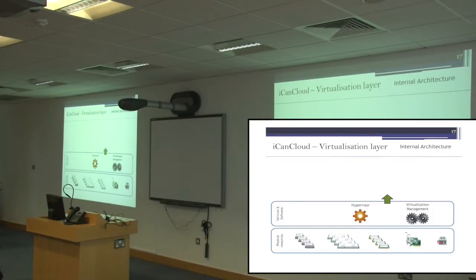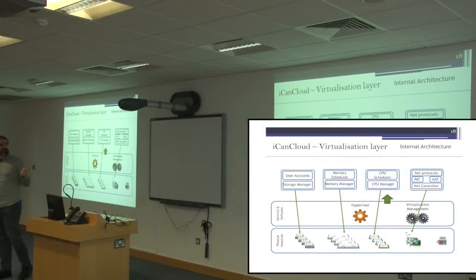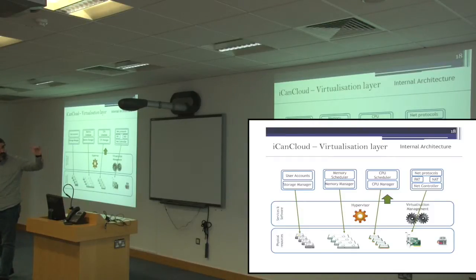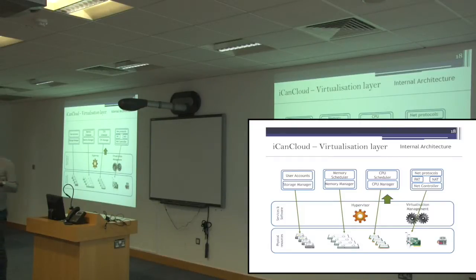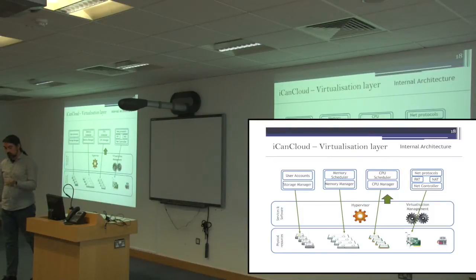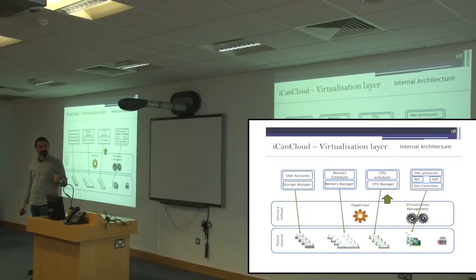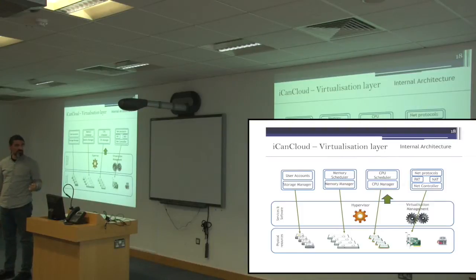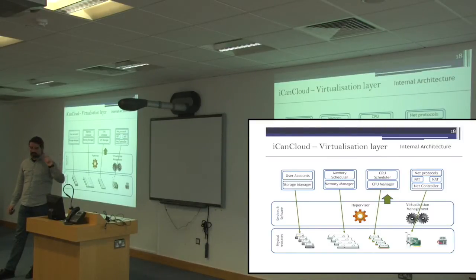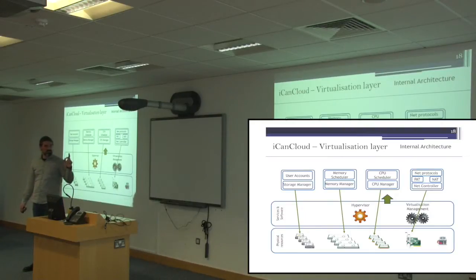For the virtualization management, there are four main blocks. One controls user accounts for different kinds of users in the cloud. Each of those four components provides an API to implement new policies. There are models for memory ballooning with and without over-provisioning. For CPUs, the credit policy and pools of CPUs are modeled. For networking, there are two cloud-specific models: port address translation and network address translation, needed when a virtual machine communicates with another and the network doesn't understand virtual IP addresses.